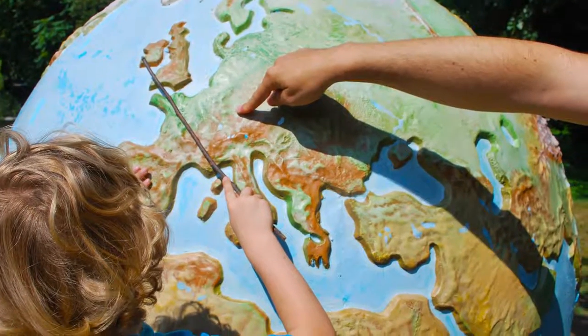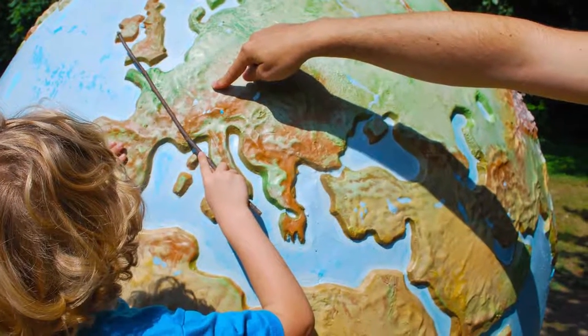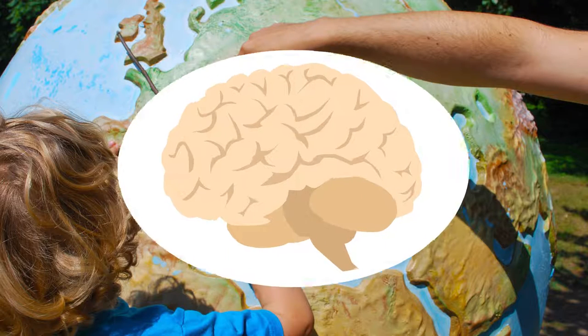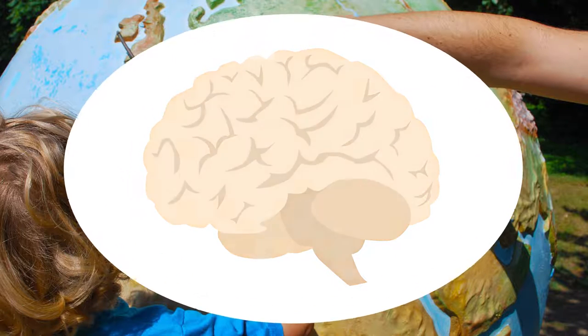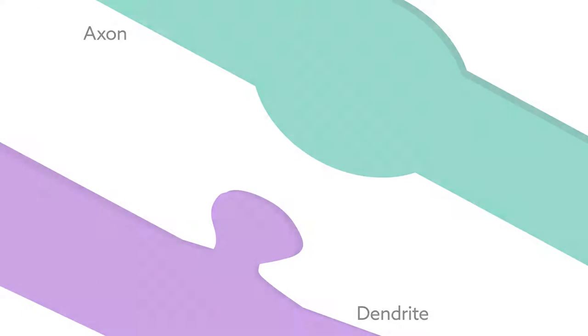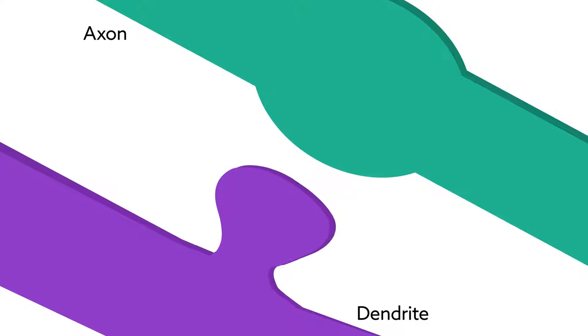Learning something new not only changes our perspectives and behavior, it actually changes the structure of our brains. Memories and experiences are recorded in the brain by altering the physical connections between neurons.